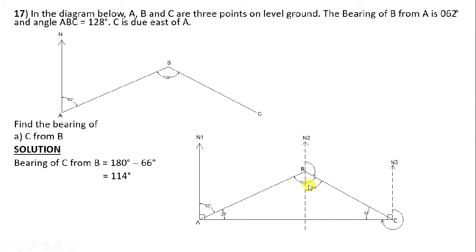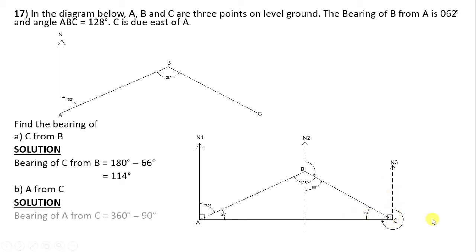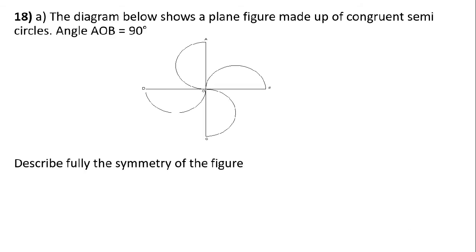Now find the bearing of A from C. Make your reference to the north at C — when they say 'from', stand at the point after the word 'from'. A three-figure bearing has only one reference, which is the north. Since this is a right angle, the bearing of A from C equals 360 − 90 = 270 degrees.